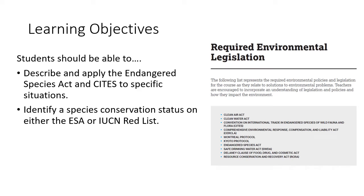The learning objectives for this are going to look a little different than usual. Be able to describe and apply the Endangered Species Act and CITES to specific situations, and be able to identify the conservation status of a species on the Endangered Species Act or the IUCN Red List. AP does not provide specific topics or learning objectives for the legislation you need to know, but you do need to know 11 pieces of legislation — both international and U.S. policy.